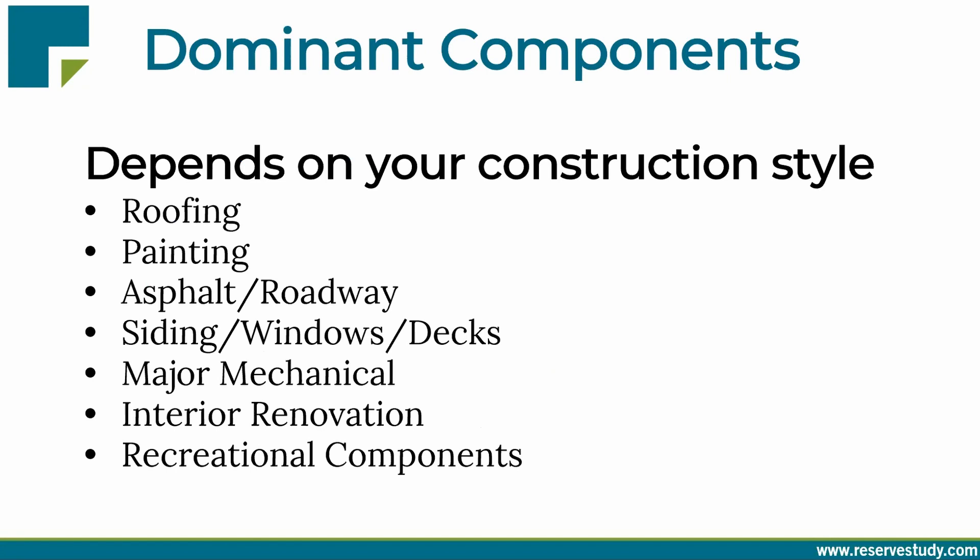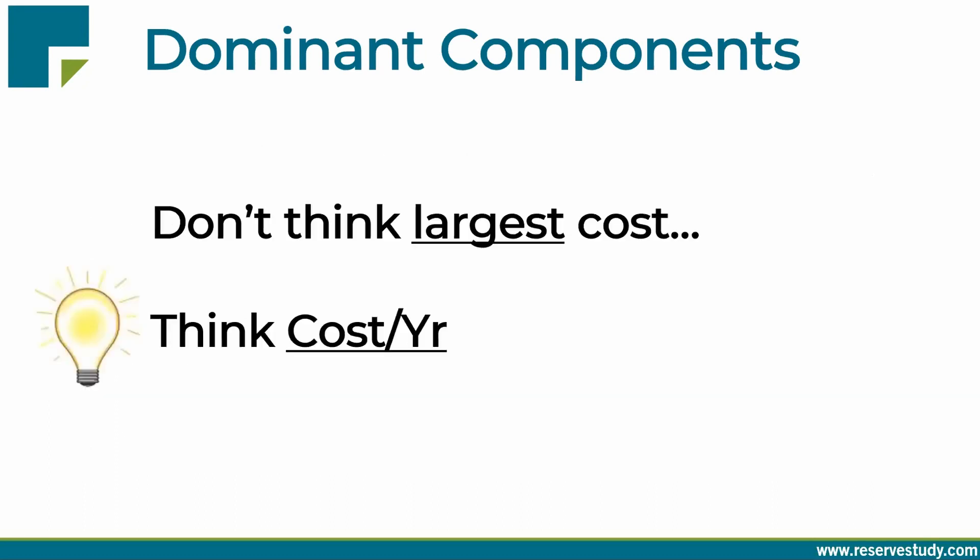For typical townhome associations across the country, the dominant components are roofing, painting, and asphalt. In cooler or moist climates, you can add siding and either windows or decks or both. In mid- or high-rise condos you typically don't have as much asphalt or roofing, but you do have major interior hallway projects and major mechanical components such as HVAC systems, boilers, elevators, and fire alarm systems. In HOAs and planned developments, it's usually the roadway system and recreational components that are most significant — maybe docks or tennis courts.